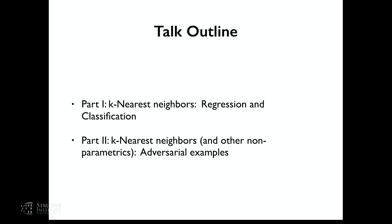Tomorrow we are going to change tracks and talk about some recent work we have done on adversarial examples — specifically adversarial examples for k-nearest neighbors: when is it robust, and so on. Towards the end tomorrow, we'll talk about more general non-parametric adversarial examples, and some very new results on how adversarial examples behave quite differently for non-parametric than parametric methods.